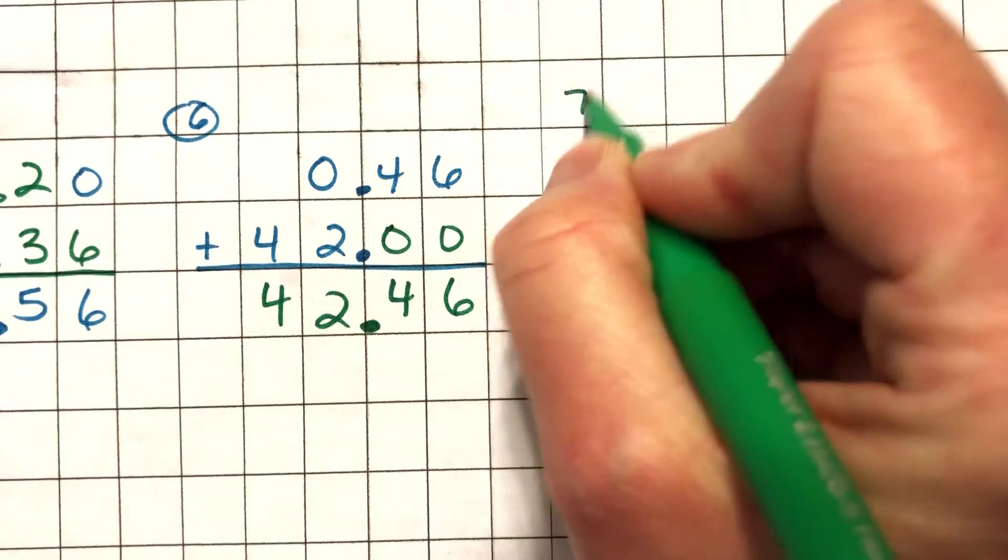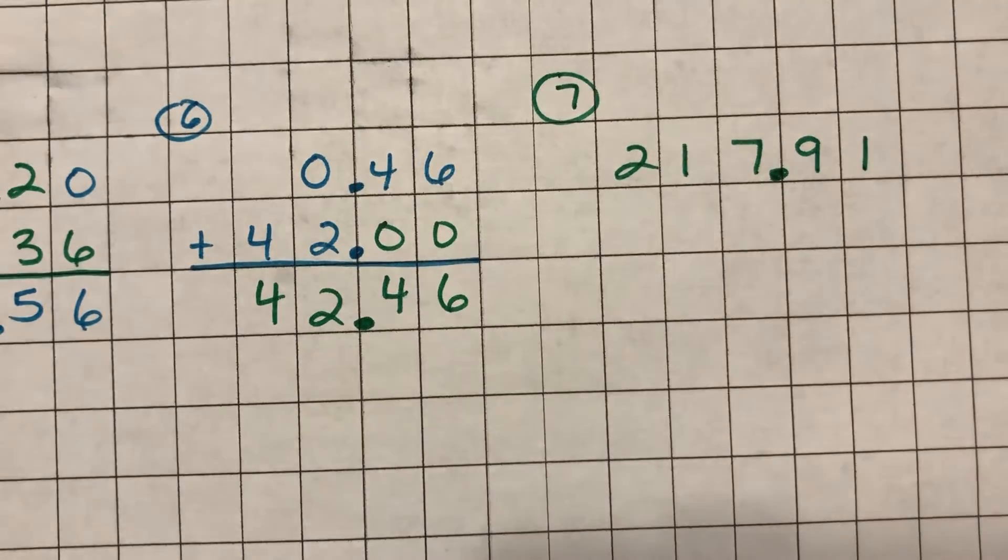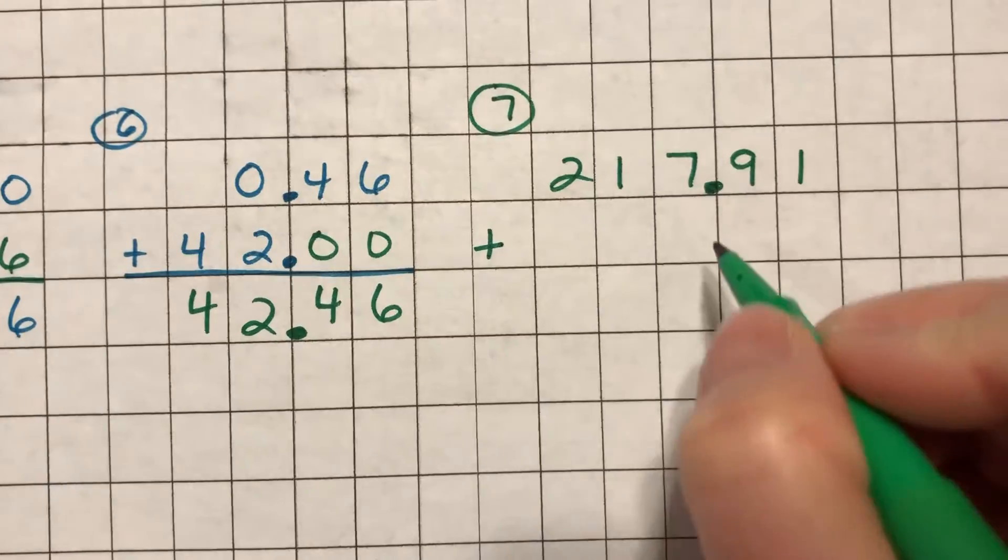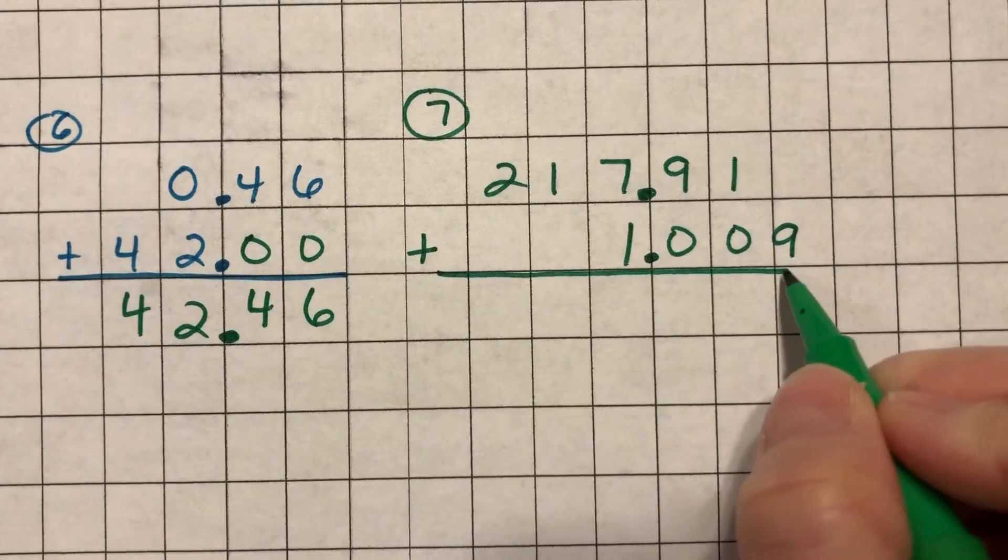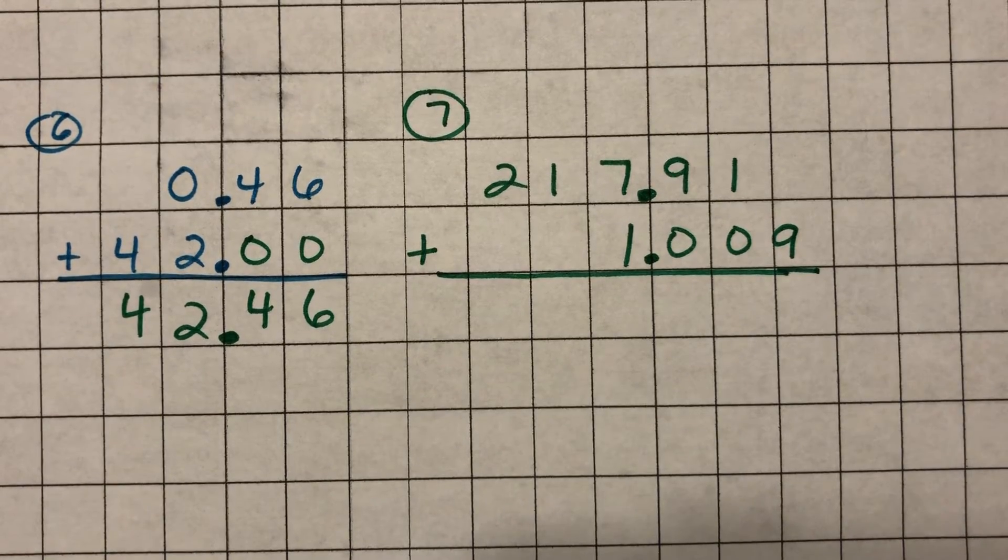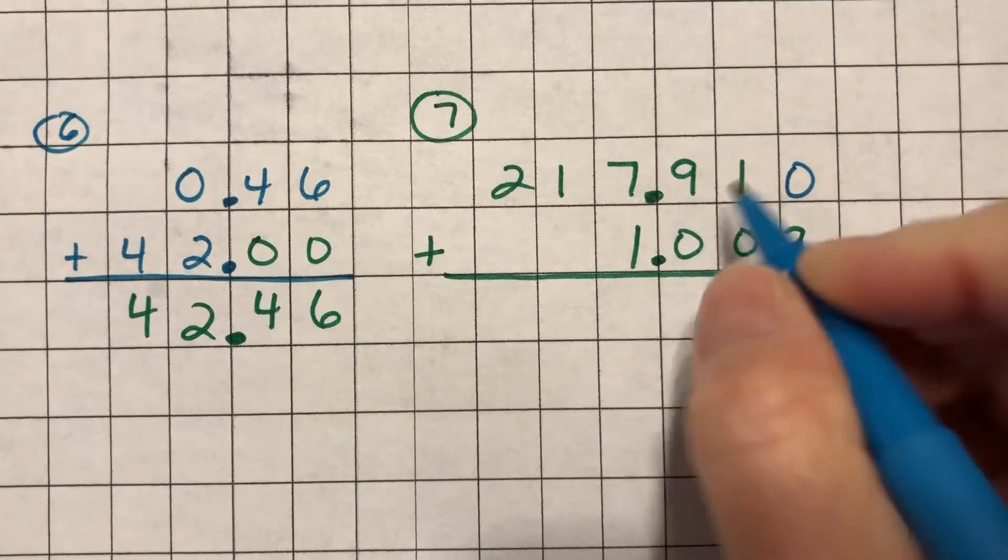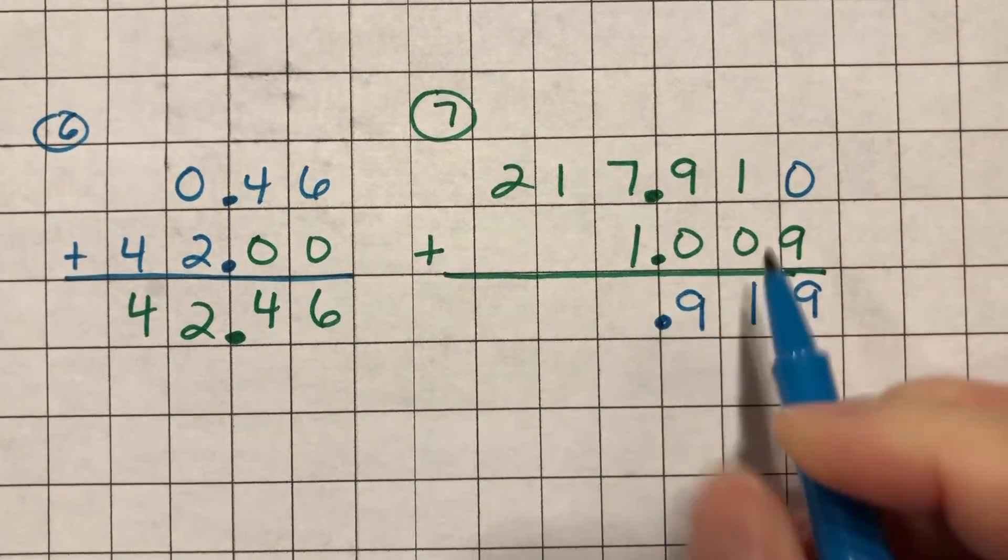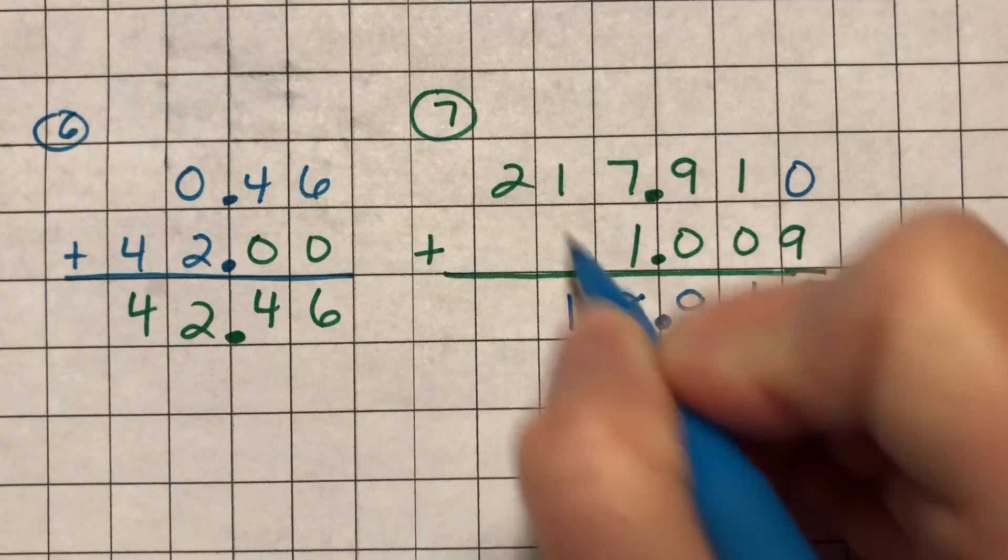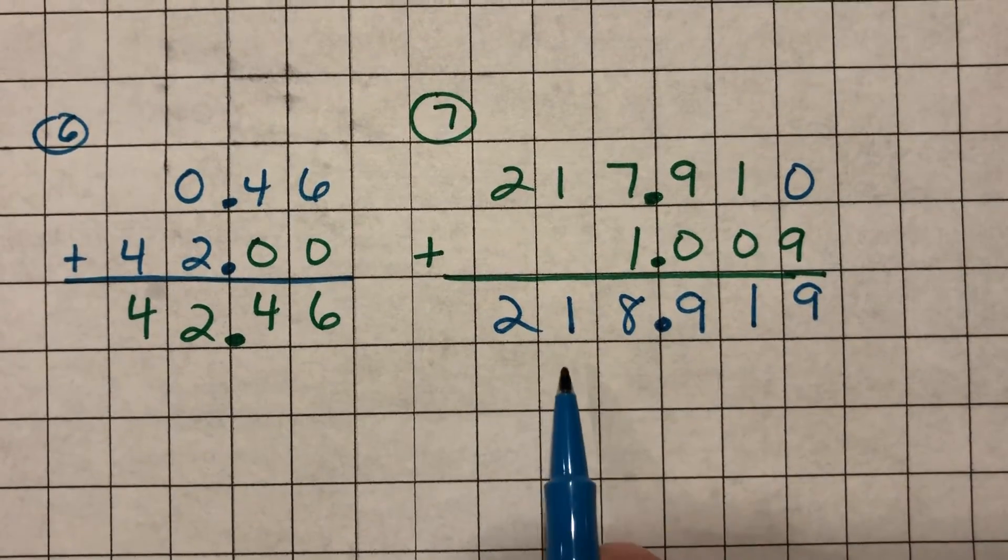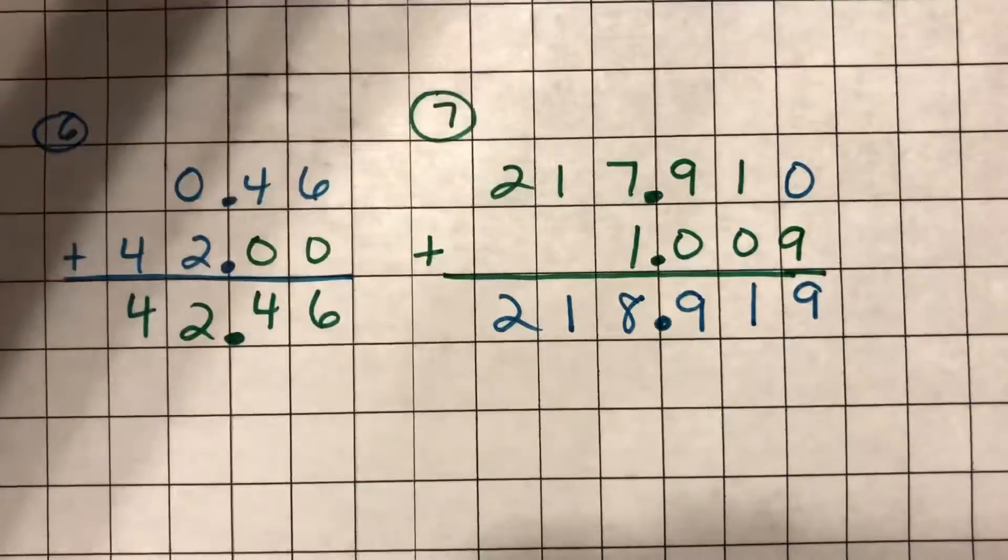Welcome back. Alright. Number seven, I have two hundred seventeen and ninety one hundredths. And to that, I want to add one and nine thousandths. So this is how you should have it lined up. Again, we're putting our place values together just like we learned to do with whole numbers. So there's nothing here that means zero plus nine is nine. One plus zero is one. Nine plus zero is nine. Keep your decimal point there so I can separate my ones from my tenths. Seven plus one is eight. And one plus empty box is one. And two plus empty box is two. So you get an answer of two hundred eighteen and nine hundred nineteen thousandths. That's how we would say that.